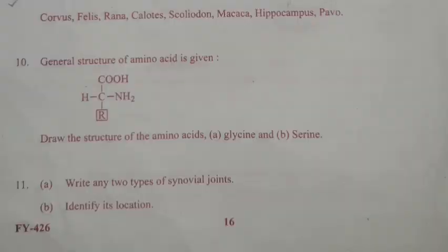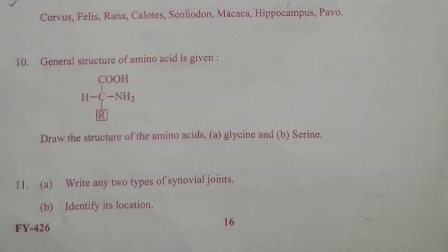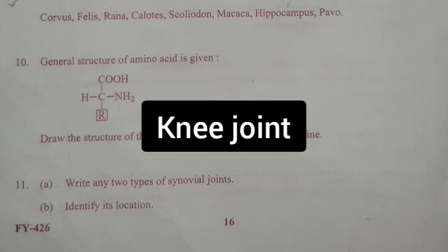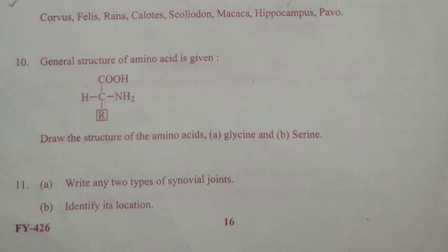Question 21A: Write any two types of synovial joints. Answer: Ball and socket joint, hinge joint, gliding joint. Question 23B: Identify its location. Answer: Ball and socket joint between humerus and pectoral girdle; hinge joint in knee joint; gliding joint between the carpals. Write any two.